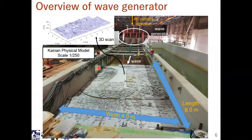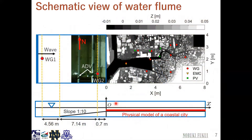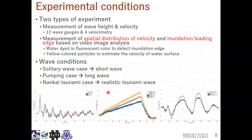We made a 1/250 scale model of Kainan city and set up the model on the tsunami flume. Here is the wave generator — we generate a wave from one end to the other. We introduced 12 wave gauges offshore and in the run-up area, and some bathymetries were also introduced. We conducted two types of experiment: one is measurement of wave height and velocity using wave gauges and ADVs, and the other measures the spatial distribution of velocity and the inundation leading edge based on video image analysis.